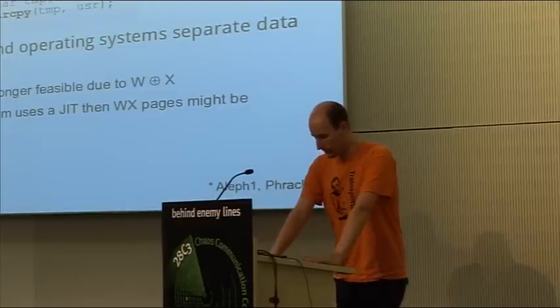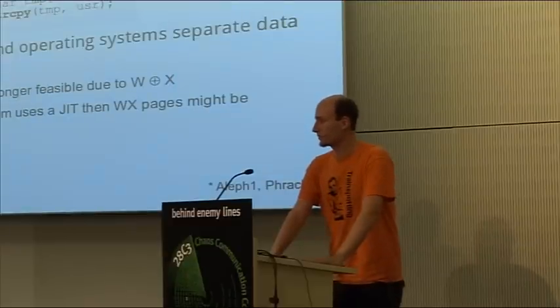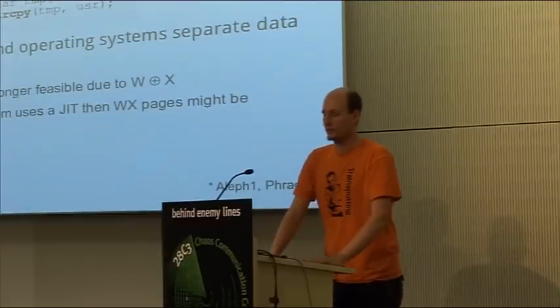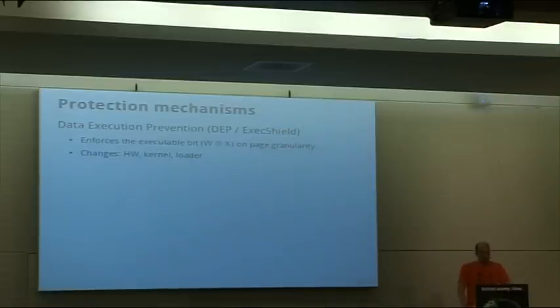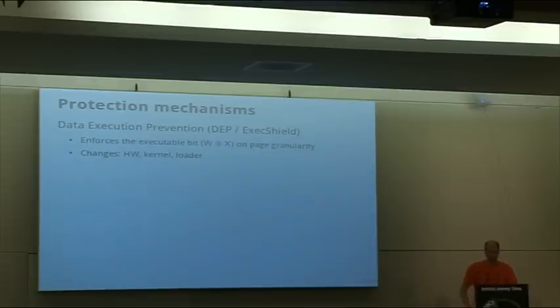Let's look at the three most dominant protection mechanisms that make our lives a bit harder. The first is data execution prevention, called DEP or exec shield on Linux systems. This protection mechanism enforces the executable bit that hardware provides on a page-level granularity. If a page is not executable, then code on that page will not be executed by the processor. This limits all code injection exploits if set up correctly.